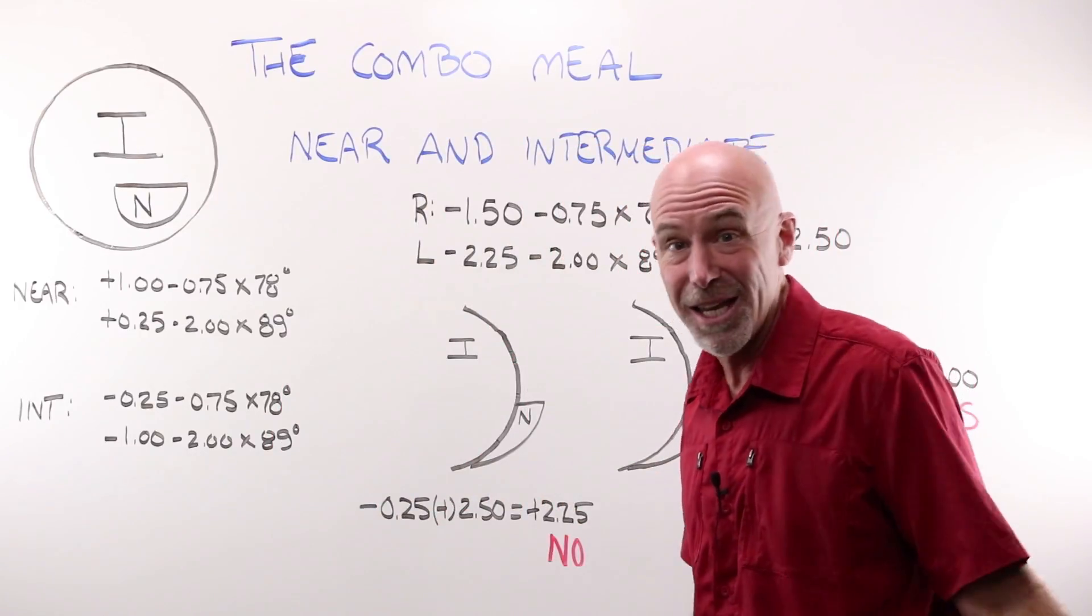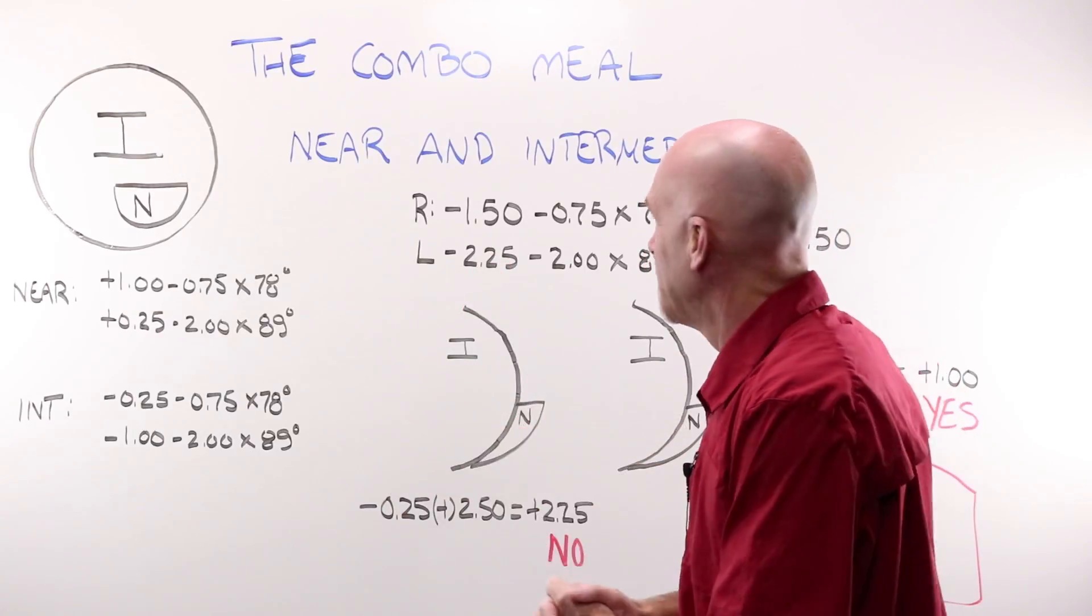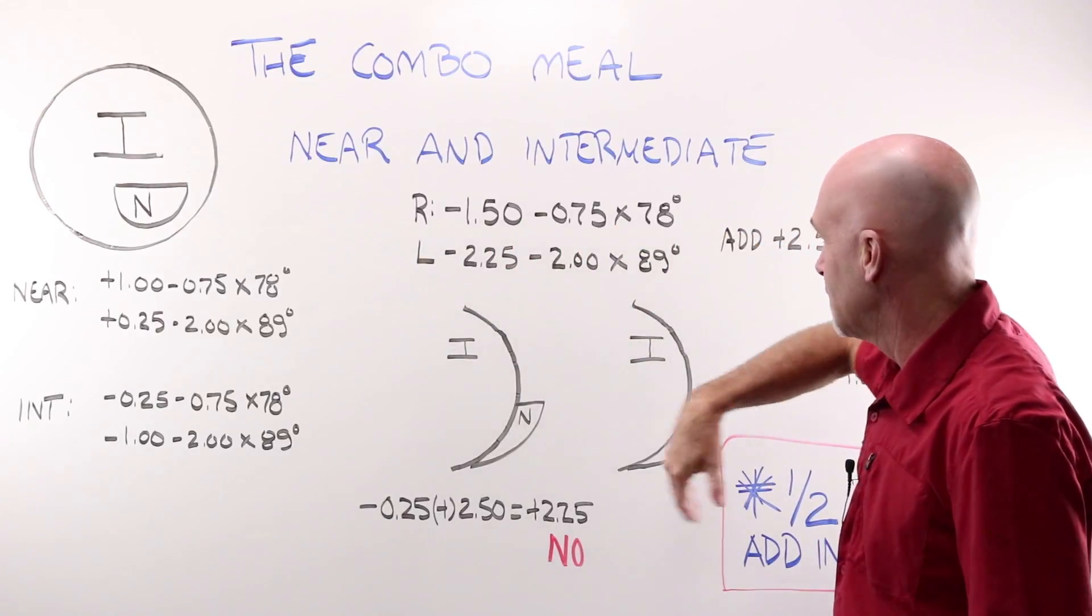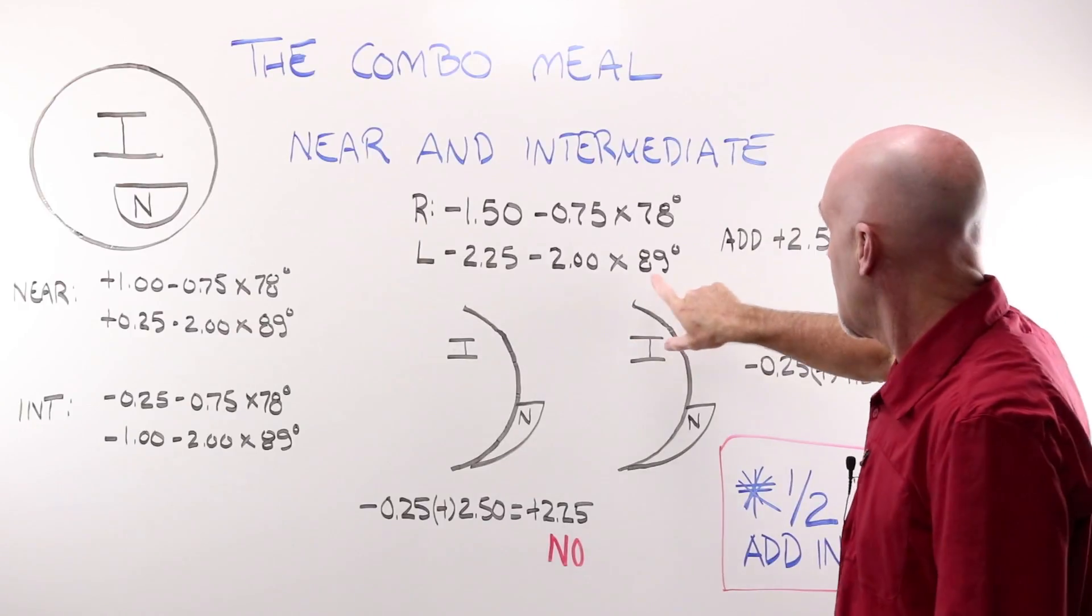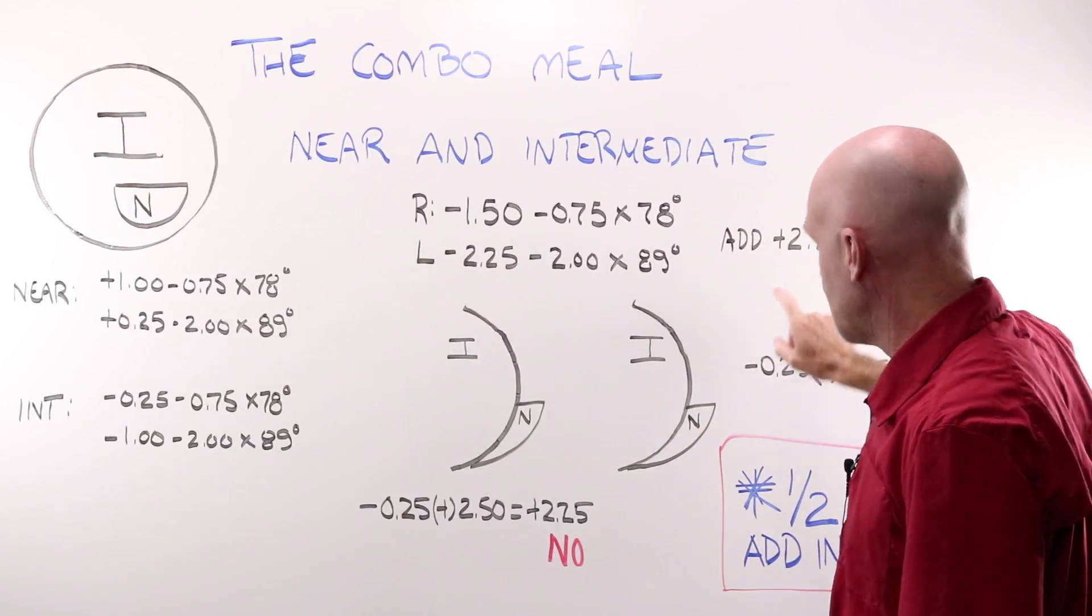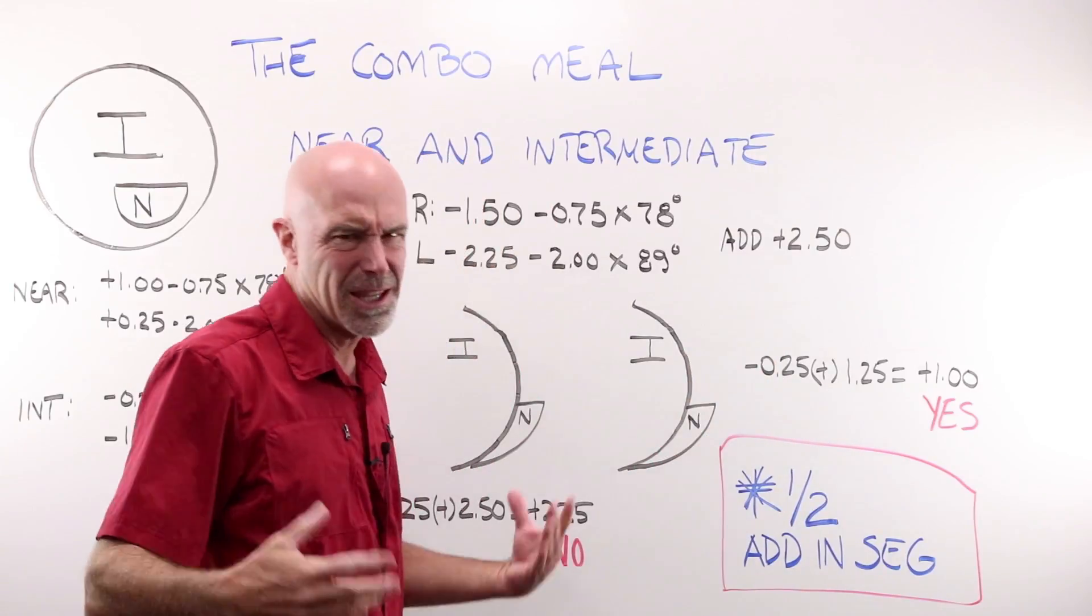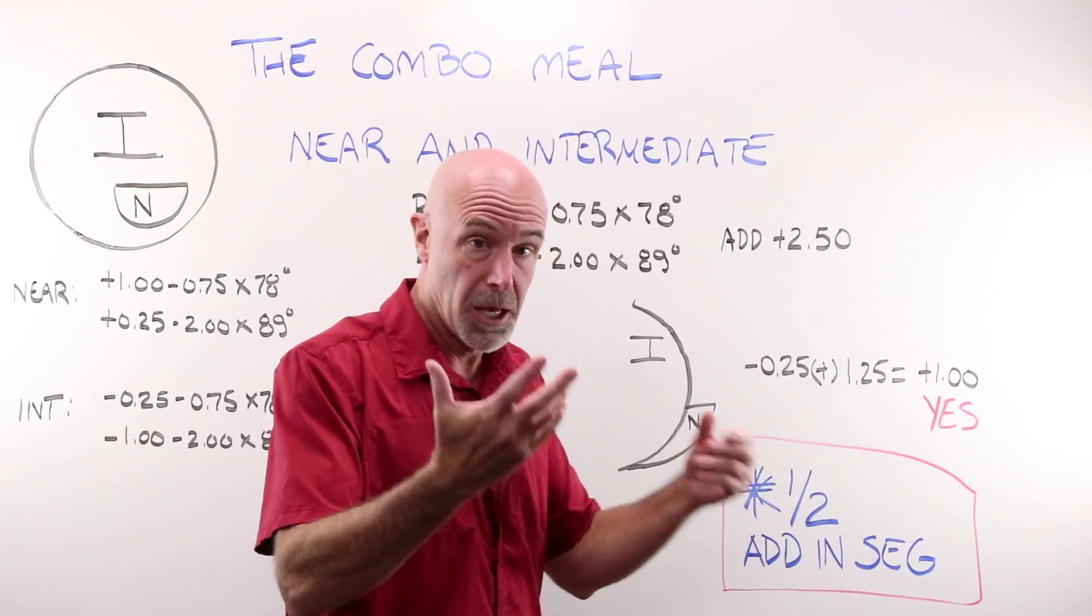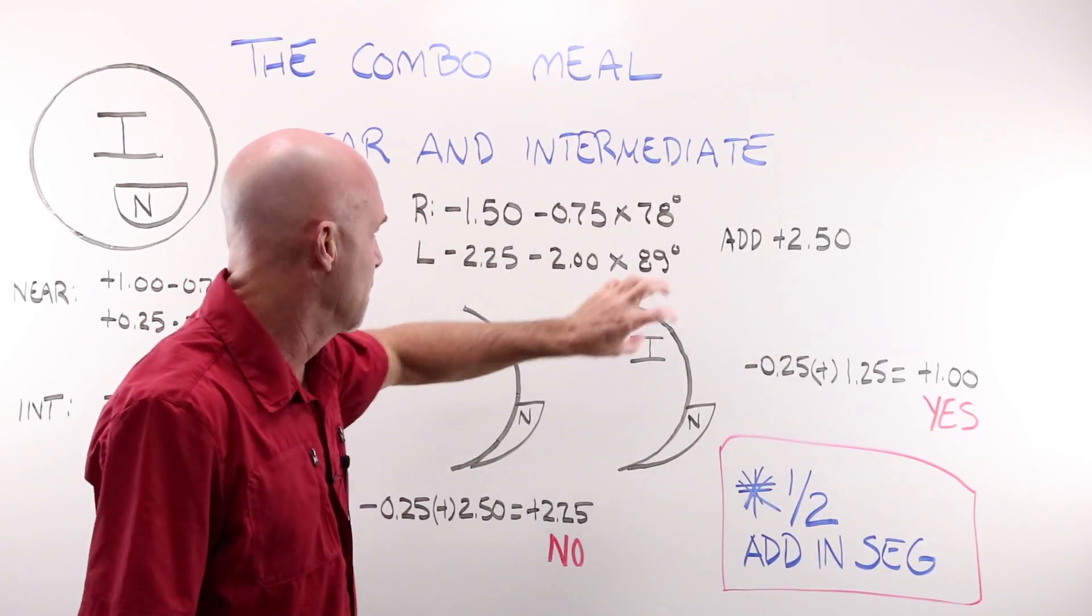And as I always say, if in doubt, draw it out. If I have this prescription, a minus 150, minus 75, at 78, a minus 225, minus 2, high cyl and an axis of 89 with an add of 250. And this is kind of the high end of an add. Yeah, they go to three, but most people stop at about a 250 when they finally max out on their ability to accommodate. Extremely realistic scenario. Minus two, they would definitely need a reading, an intermediate pair in order to see clearly with an add like that.